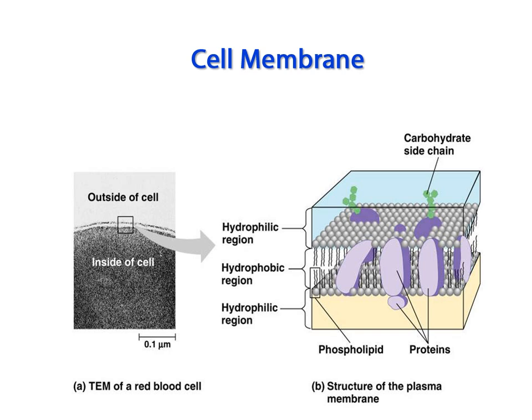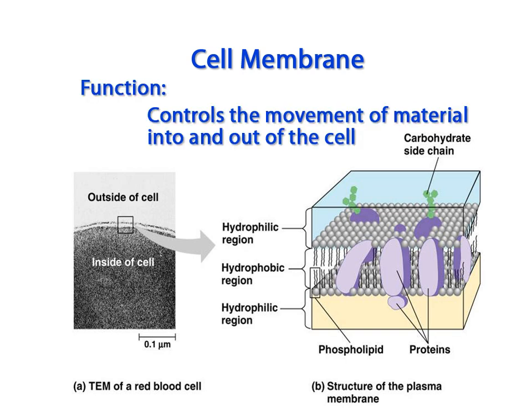The cell membrane is the last organelle that you will need to know for this course. It acts like your skin. In other words, the cell membrane is the barrier between the internal and external environment of the cell. So it controls the movement of materials into and out of the cell, thereby protecting it. An understanding of this organelle is so important that the next unit will go into much more detail about the structure and function of the cell membrane.